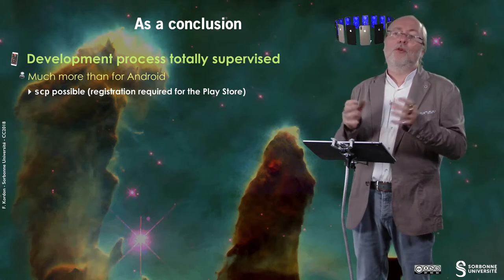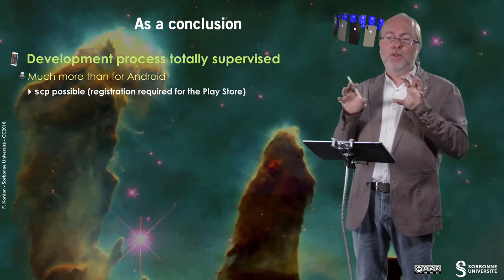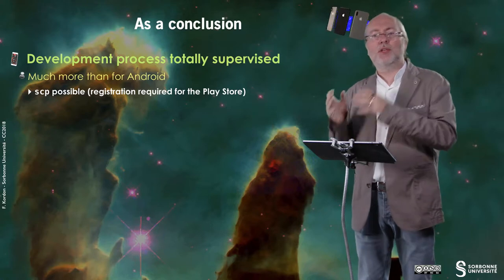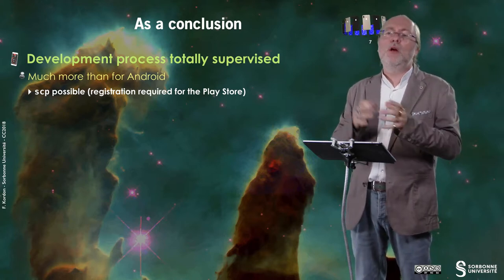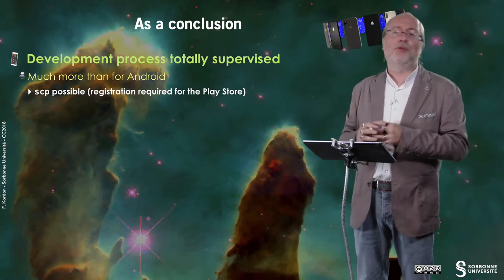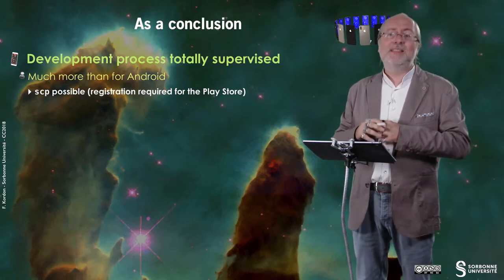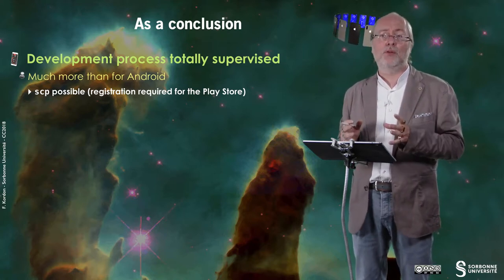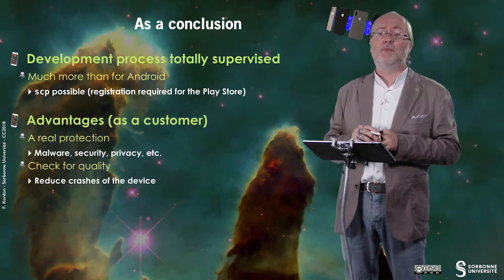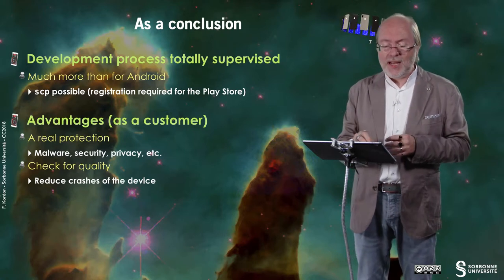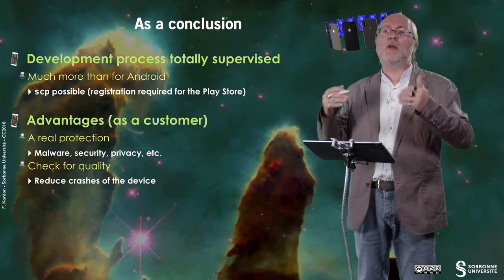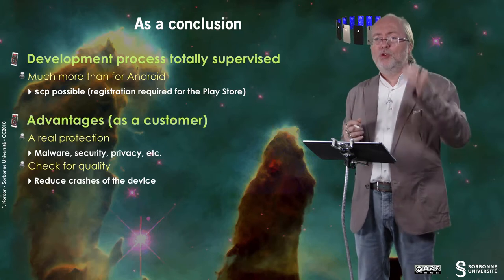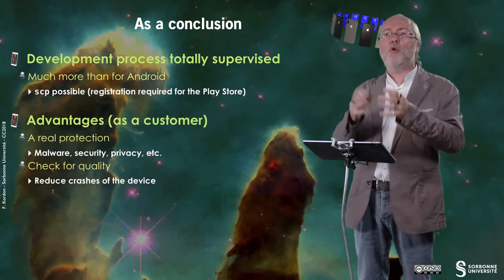In Android and in iOS, the kernel of the operating system is Unix-based. So in Android, you can do SCP between your computer and the device, even though you also have a Play Store and a way to deploy the application that is similar to the one of Apple. SCP is impossible on iOS unless you have jailbroken your device, which is not recommended for many reasons. There are advantages as a customer: there is a real protection against malware, security, privacy, etc. It means that for Apple, it's very easy — even if a malware goes through the process, which happens sometimes — to suddenly deactivate this application, and it's very easy to track who fetched this application and warn them that they may encounter a problem.